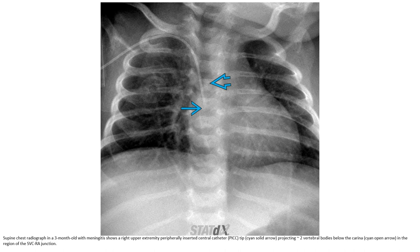This is a supine radiograph in a three-month-old patient with the right upper extremity PICC inserted. The tip is at two vertebral bodies below the carina, in the region of the SVC-RA junction.